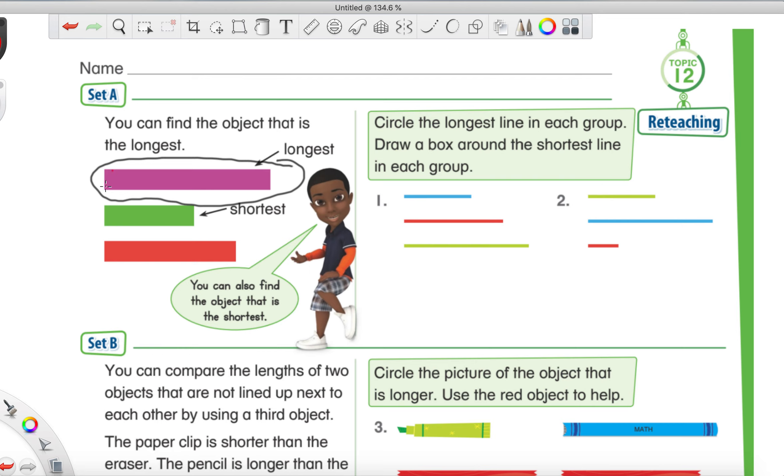And for the shortest line, you're going to make a box. You're going to make a box around the shortest one. Let me get a different color here so it stands out. So of course for the box, we have angles, we have corners. So for the longest one, you make a circle. Shortest one, you're going to make a box. So go ahead and try it with number one. Put a box around the longest line. Put a circle around the shortest.